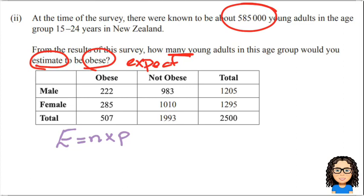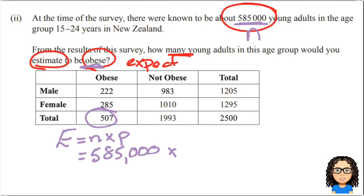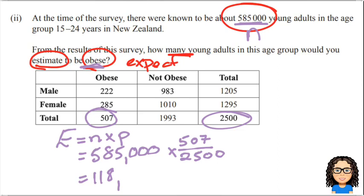In this case, we've got this value here of 585,000 — that's our value of n. So I'm going to say 585,000 times the chance of being obese. We've got 507 obese people out of a total of 2,500. So we're going to say 507 over 2,500, multiply that by our 585,000, and that will give us 118,638 people.